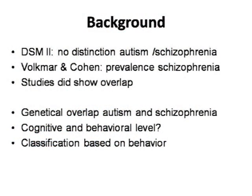Something about the background. In the DSM-II, there was no distinction between autism and schizophrenia, and everything was called childhood schizophrenia. Volkmar and Cohen, around that same period, researched the prevalence of schizophrenia in individuals with autism, and what they found was that the prevalence of schizophrenia was not higher in autism than in a general population. At that time, this confirmed the idea that these two were very separate disorders, autism and schizophrenia.